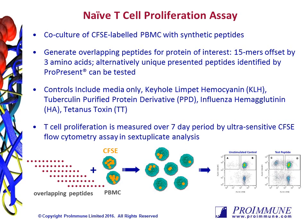Each peptide is co-cultured in six replicates with the CFSE-labeled PBMCs. In addition to the test peptides, there are five controls run in the naive T-cell proliferation assay, including a media-only control, whole protein controls, KLH and PPD, and synthetic peptide controls — influenza HA and tetanus toxin.